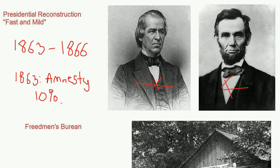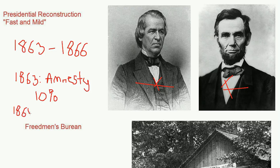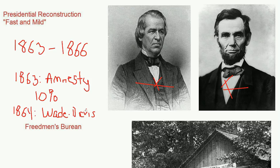Congress at this time was dominated by what we call Radical Republicans — a group very concerned not only about winning the war, but also about ensuring that African Americans received equal rights and were protected from abuse by Southerners. The radicals in Congress rejected Lincoln's 10% plan as far too lenient on the South. In 1864, they submitted their own plan, known as Wade-Davis, which required an ironclad loyalty oath from a majority of citizens. It also required the military to enforce law and order in the South until that majority had sworn the oath, ensuring that African Americans were given equal rights.